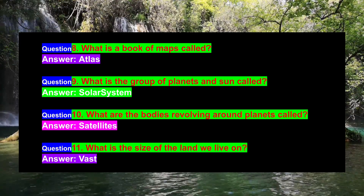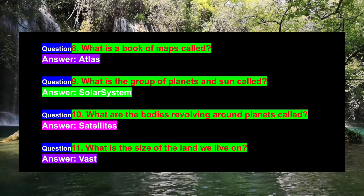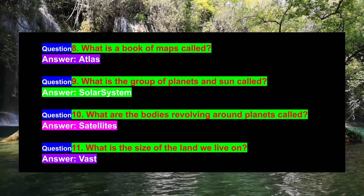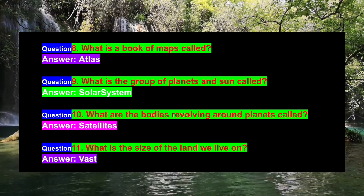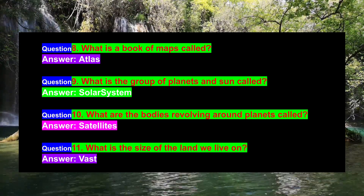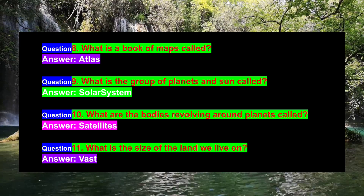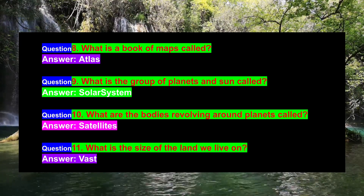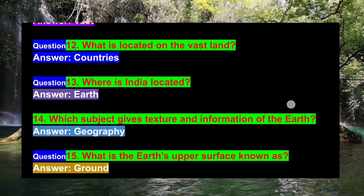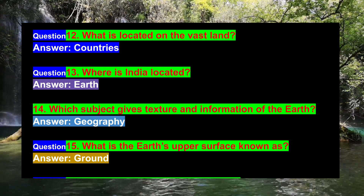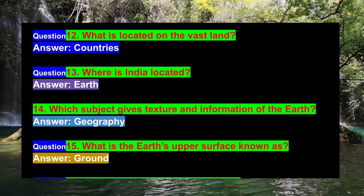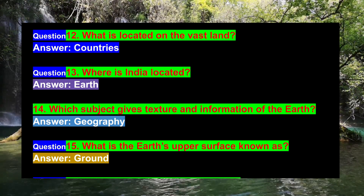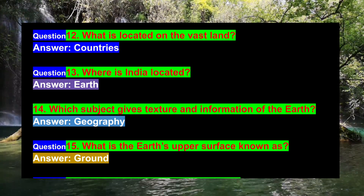Question 10: What are the bodies revolving around planets called? Answer: Satellites. Question 11: What is the size of the land we live on? Answer: Vast. Question 12: What is located on the vast land? Answer: Countries.